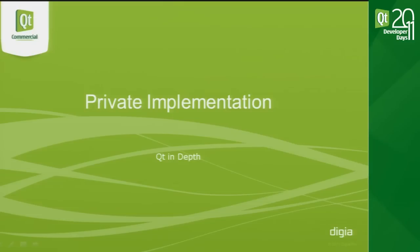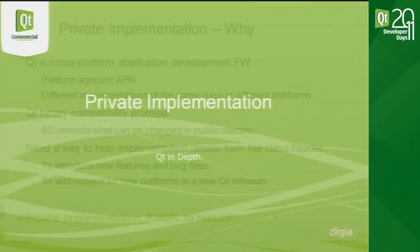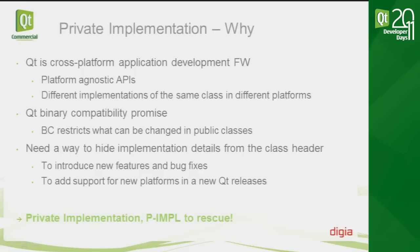The first topic is private implementation. Before looking into details of what it is and how it's used in Qt, I would like to give some highlights on why private implementation is needed. Qt is a cross-platform application development framework, and writing good maintainable cross-platform code typically means that platform-specific code should be isolated from the API level as much as possible. This also means there will be several implementations of some classes — basically one for each platform.